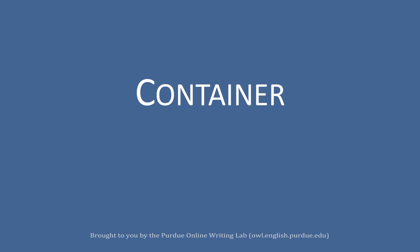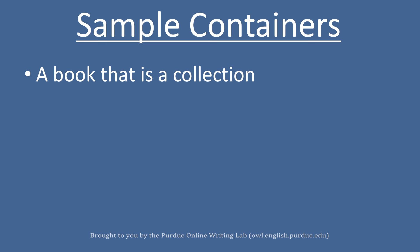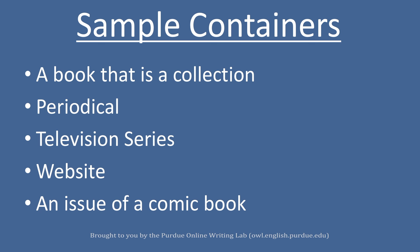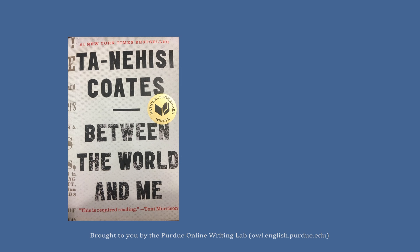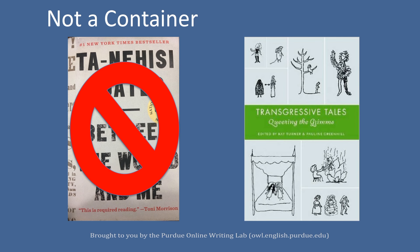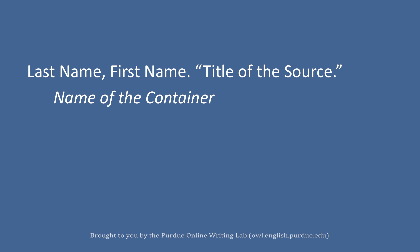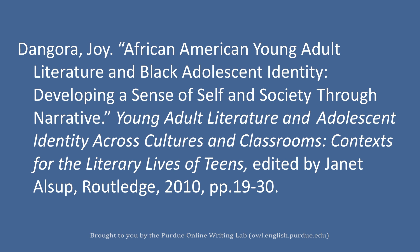Container. The container is simply the larger source that your article or chapter is contained within. Examples of containers include a book that is a collection, a periodical, a television series, a website, or even an issue of a comic book. If you are citing an entire book, you will not need to place anything here because you have already cited the container. However, if you are citing a smaller work within a larger work, the container's citation is necessary. If citing a container, make sure it is always italicized and follows standardized capitalization. Place a comma after the container, since the next information describes it. In this example, it is italicized and directly after the title of the smaller work, followed by a comma.